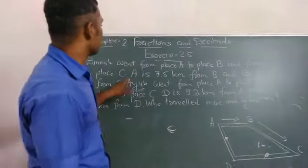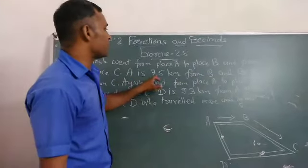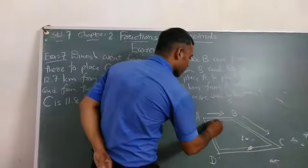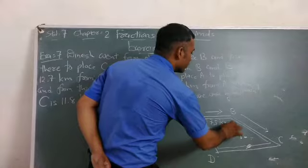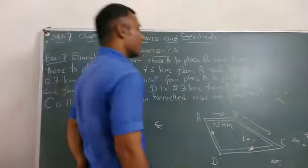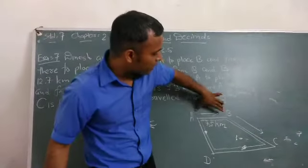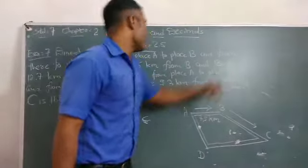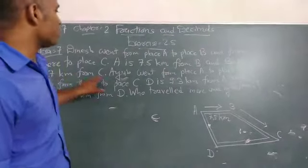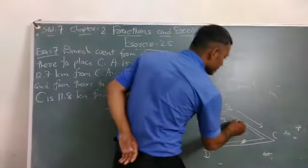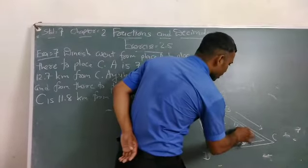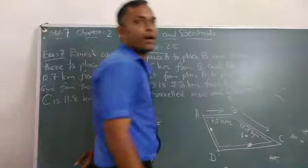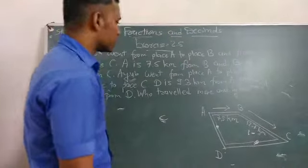Distance A is 7.5 km from B. Next, B is 12.7 km from C. BC means 12.7 km. So Dinesh traveled from A to C.